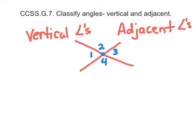You can almost see it as a V here. So angle 2 and angle 4 would be vertical. Angle 2 and 4 are vertical angles.